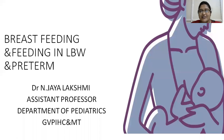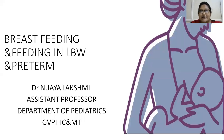Before going to that, we will quickly recollect the previous class regarding fluid and electrolyte imbalance. Total body water constitutes 60% of body weight, divided into two-thirds intracellular and one-third extracellular, and in that one-fourth is plasma and remaining is interstitial fluid.